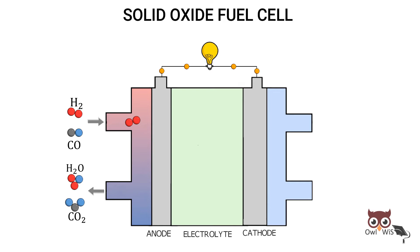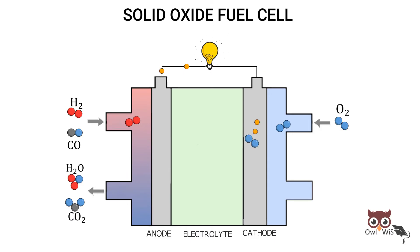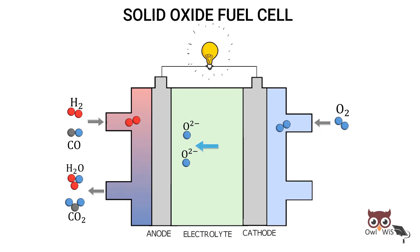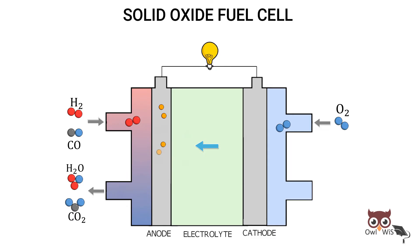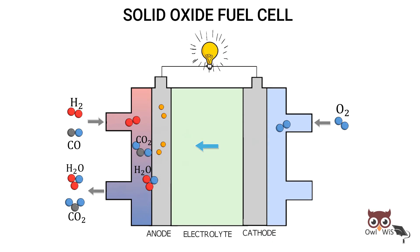On the other side of the fuel cell, oxidant — usually oxygen or air — is fed to the cathode. Oxygen accepts electrons from the external circuit to form oxide ions. The electrolyte conducts these ions between the electrodes, and the reactions repeat: oxide ions react with hydrogen and carbon monoxide to form water and carbon dioxide, thereby releasing electrons, maintaining the overall electrical charge balance.